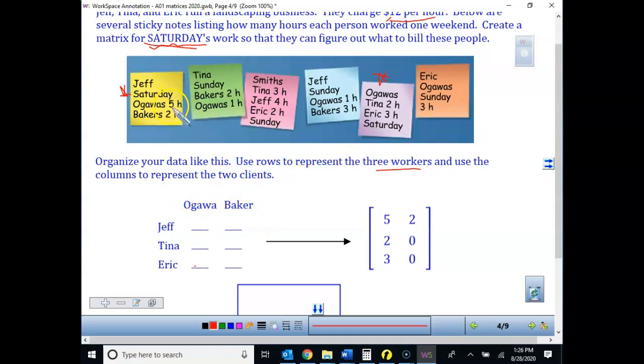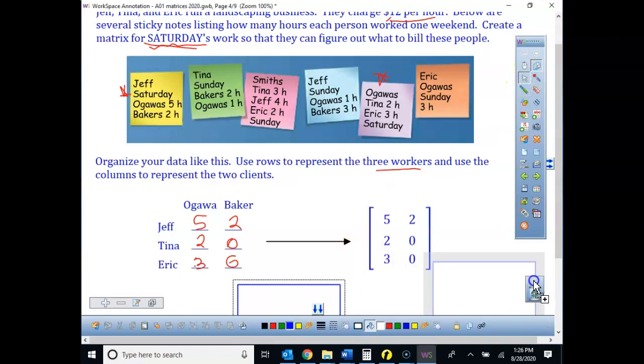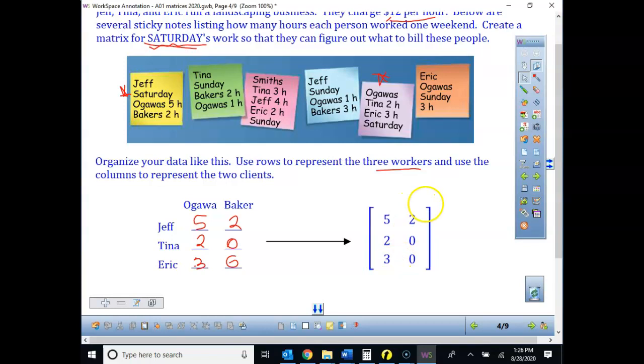So Jeff, I notice, if I'm looking at Jeff, he had 5 hours for Ogawa's, and for Baker's he had 2. Tina, I look, oh, she worked 2 hours, and Eric worked 3 hours. So if we are looking at this, 0 hours and 0 hours, when I go to make the matrix that you see in your notes, yours was blank here, and this is exactly what you want to fill in. You want to put those brackets around, so please make sure you put the brackets, and then you put the numbers. Notice there's no labels up above for the clients or over here. So that's a pretty basic one that you are taking.